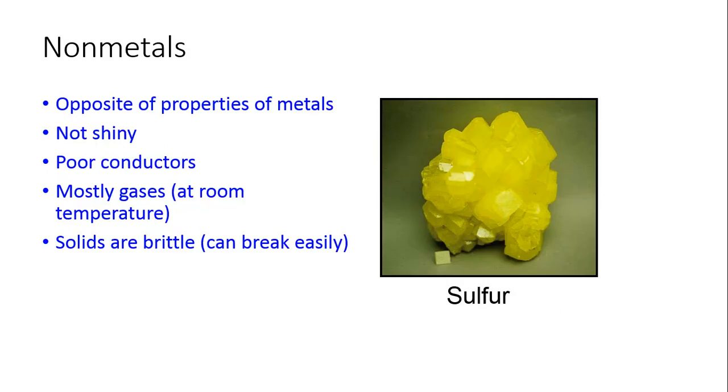A couple things about non-metals. They're the opposite of properties of metals, and they are not shiny. They are poor conductors, mostly gases at room temperature. And they are solid. The solids are brittle, which means that they can break very easily. They're not malleable. They are not ductile.